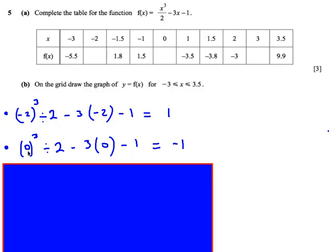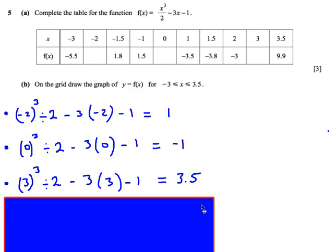Equally with the second one, when x is 0, we put 0 into this equation, 0 cubed, divided by 2, take away 3 times 0, take away 1, we get minus 1. And then for the third one, we get 3.5. Okay, so 3 marks, as long as we remember to use the brackets, should be quite straightforward.